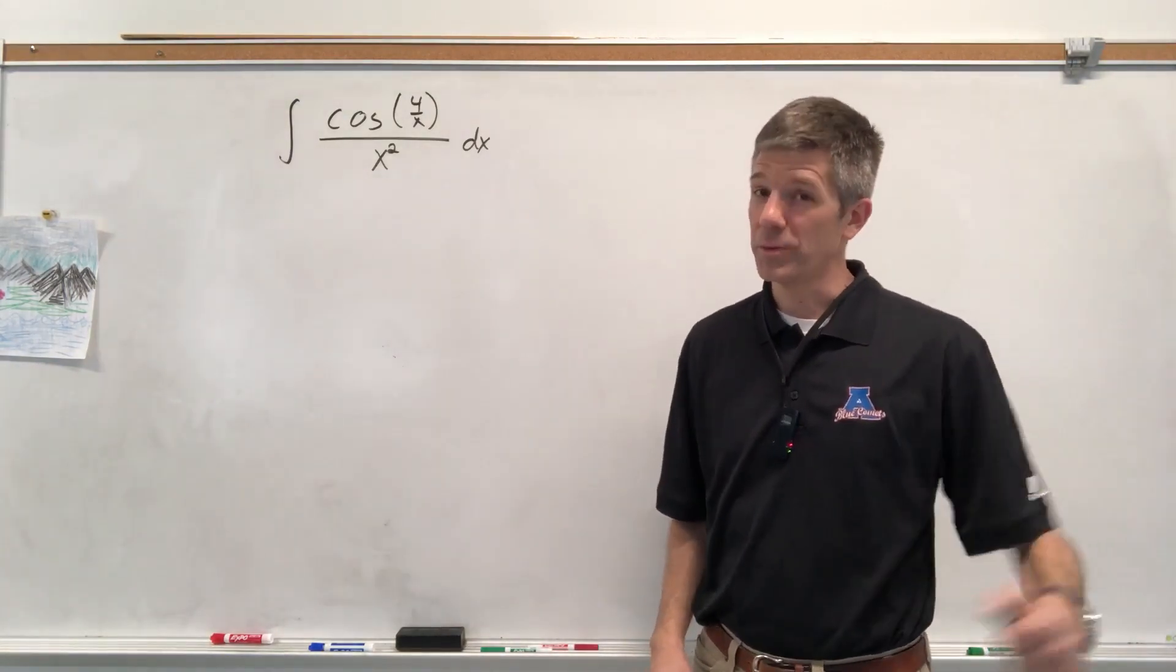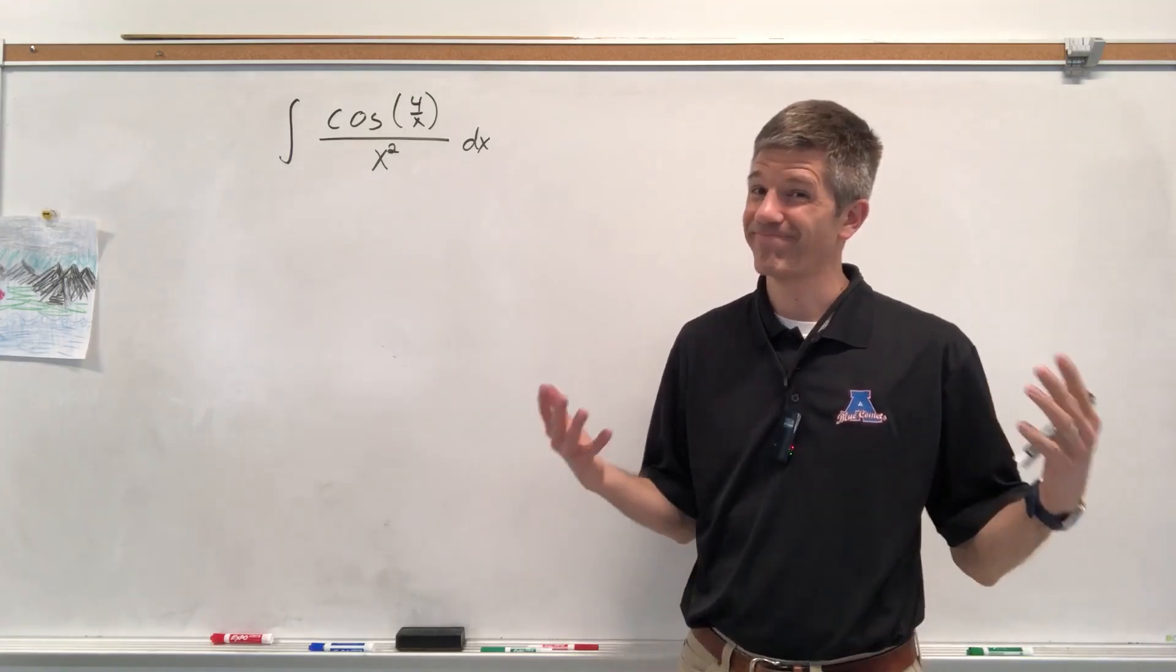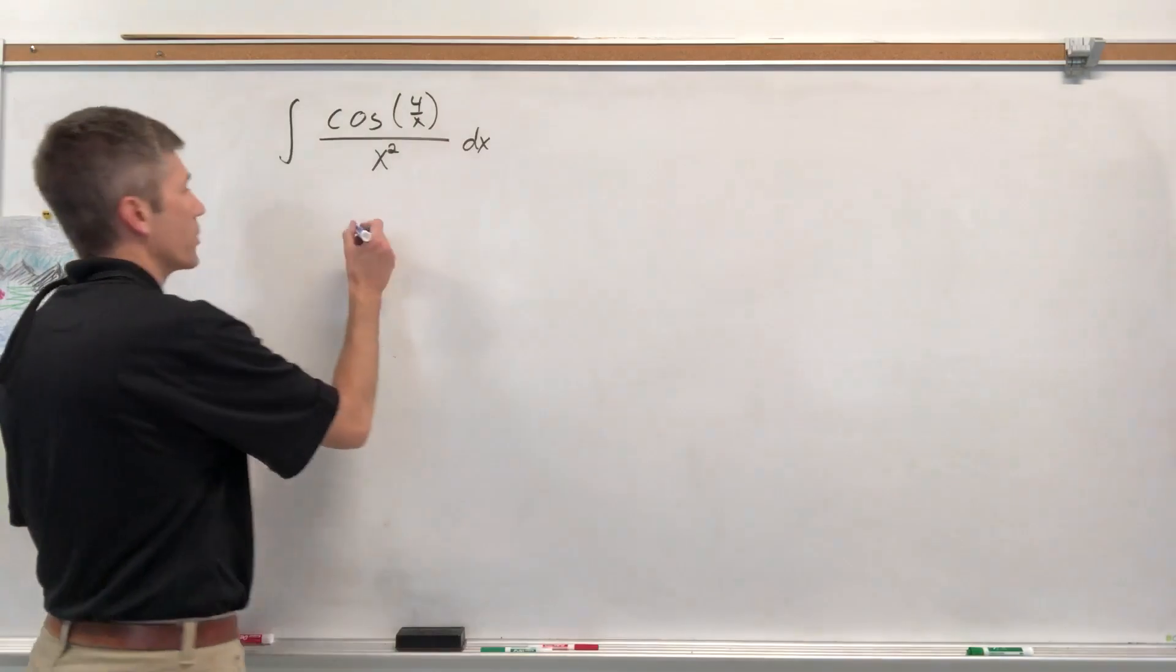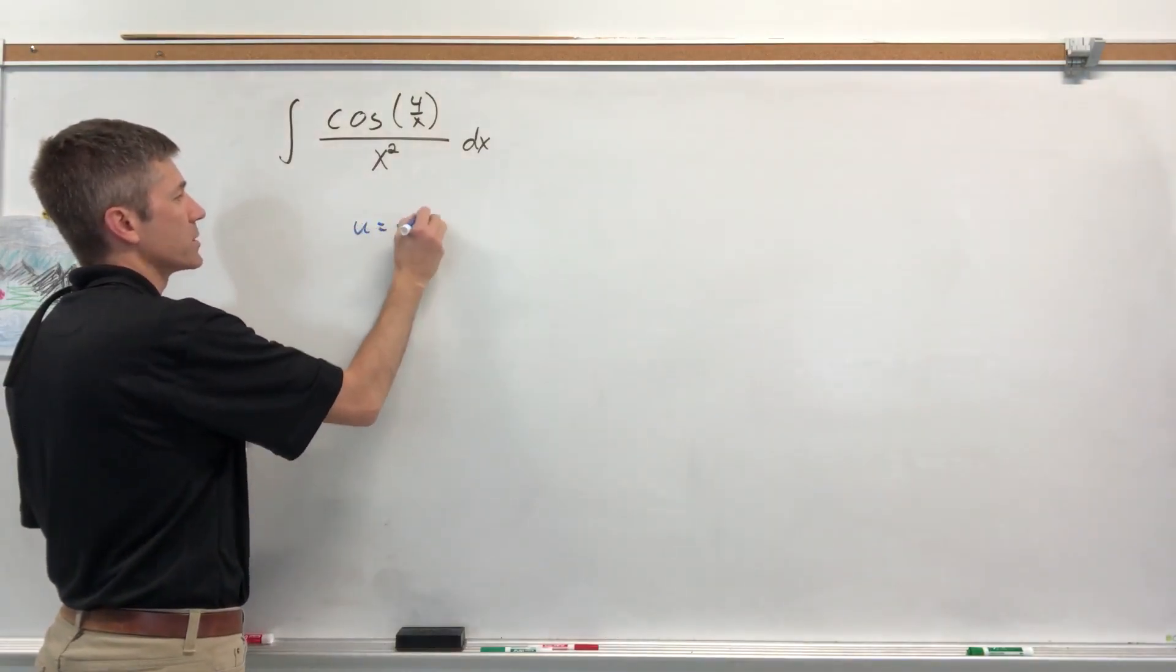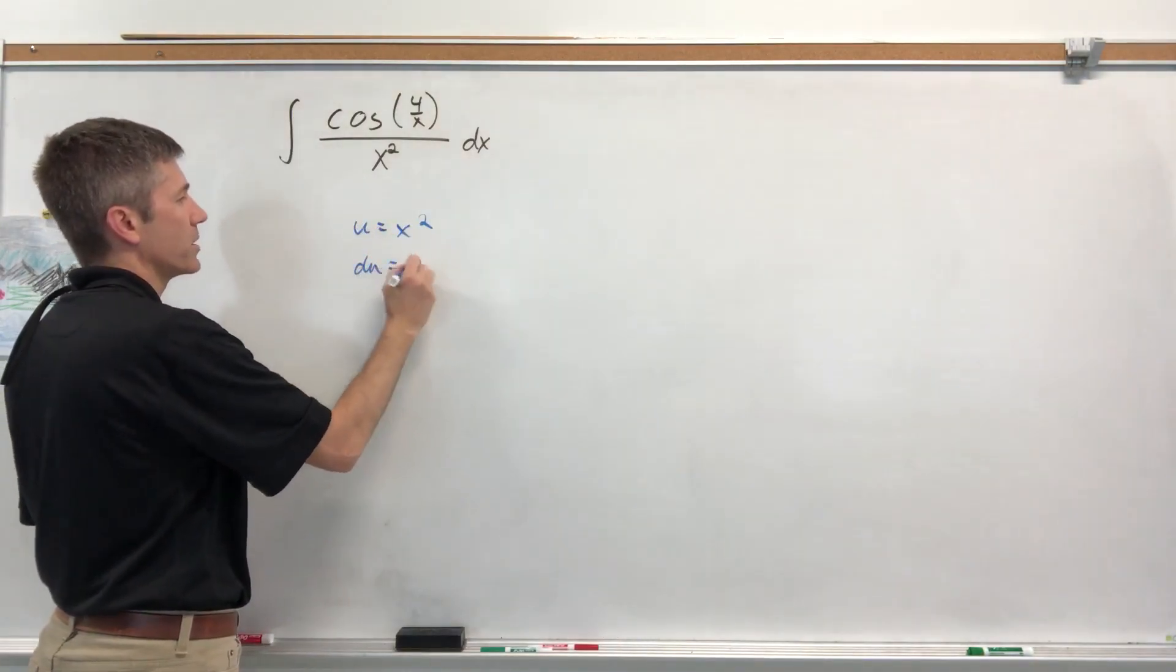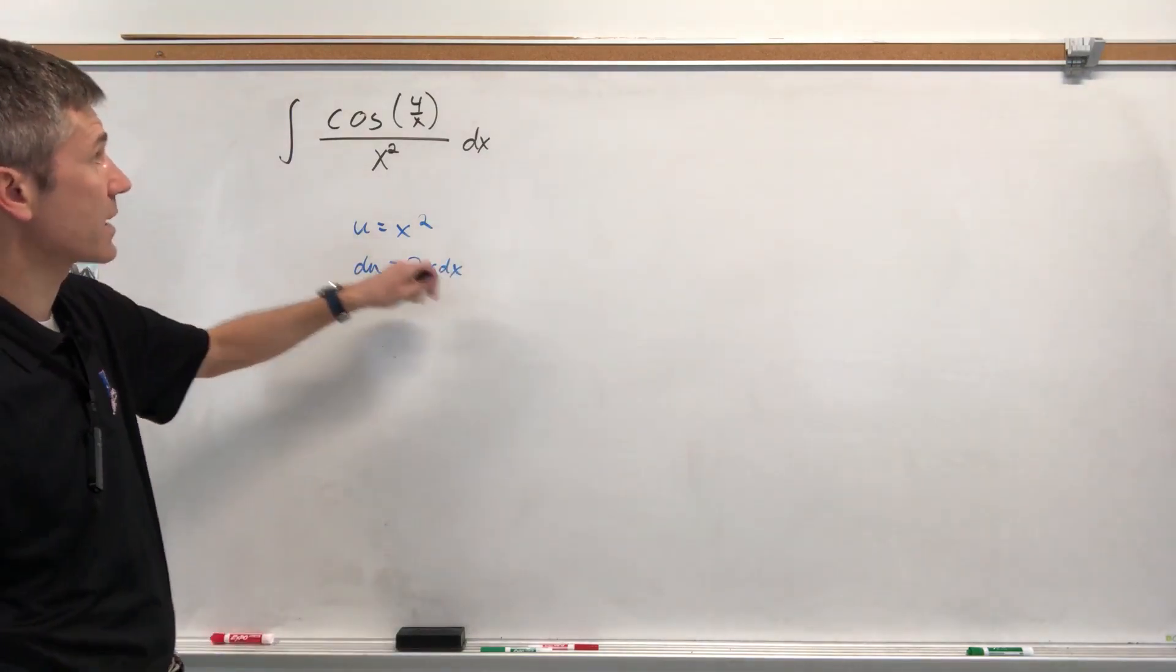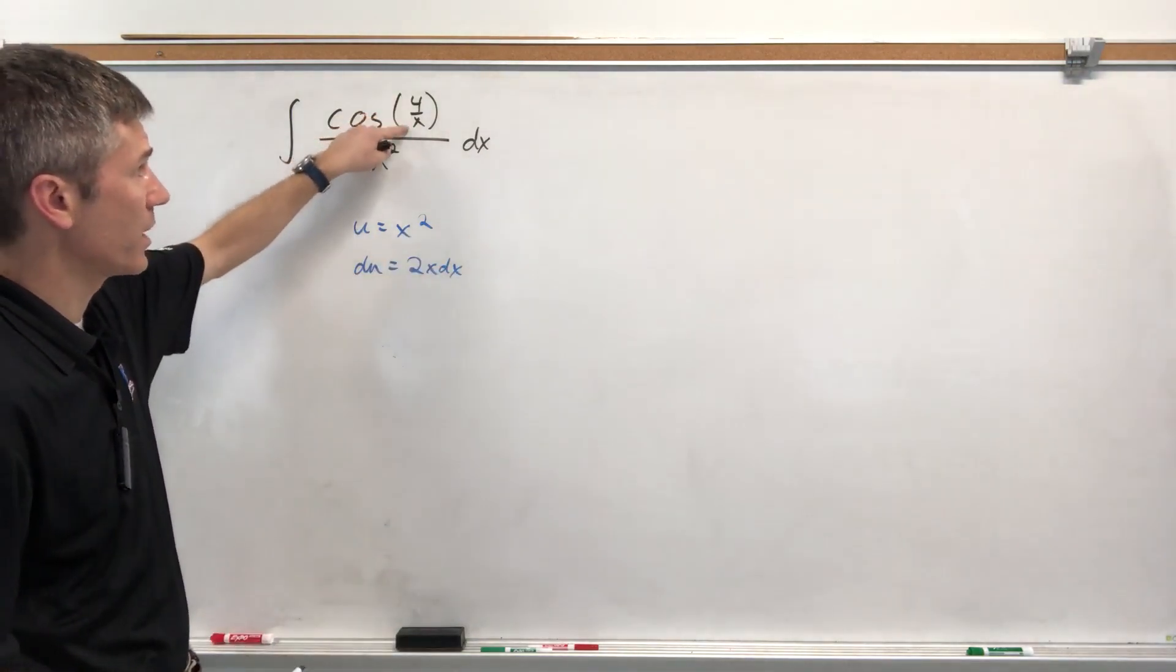And most of the time, U is the denominator. It's not. Very quickly, I want to show you why not. So don't write this because it's wrong. If U was the denominator, then DU would be 2X DX. And that's fantastic, but I don't want 2X DX. I want cosine of 4 over X.